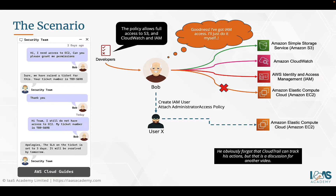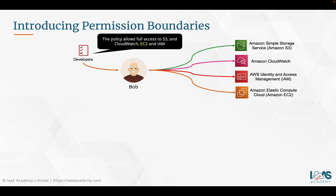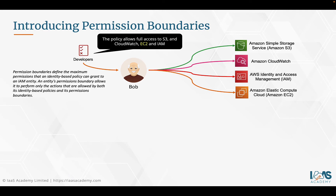The point here is that because of these privileges, Bob has been able to circumvent the security policies enforced and applied to him. That's what this lecture is all about, and I'd like to introduce you to permission boundaries. Let's look at the same example with a slight variation. Let's assume we have an IAM policy attached to the developers group that gives Bob access to S3, CloudWatch, EC2, and IAM. Permission boundaries define the maximum permissions that an identity-based policy can grant an IAM entity. An entity's permission boundary allows it to perform only actions allowed by both the identity-based policy and its permission boundaries.